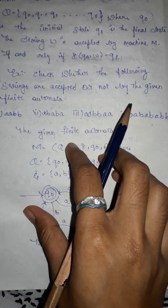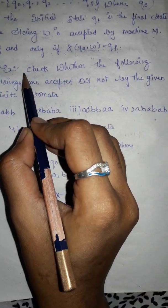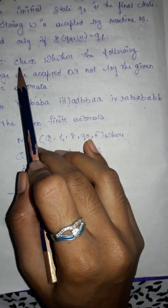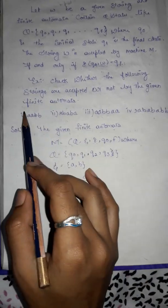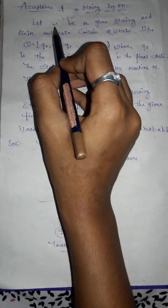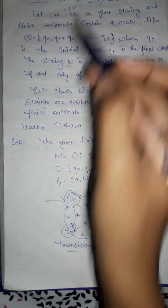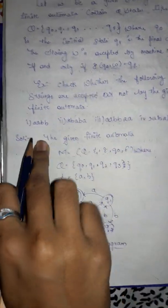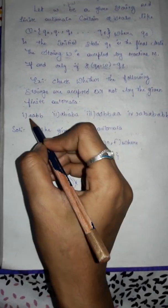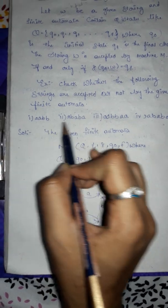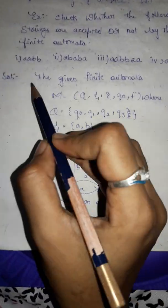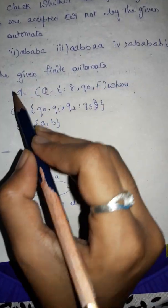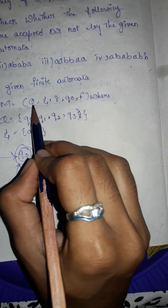The question given is: check whether the following strings are accepted or not by the given finite machine. These are the input strings w. We have to check whether each string is accepted by the finite automata machine or not. We have four input strings given. The given finite automata machine M has five tuples, as we already know.